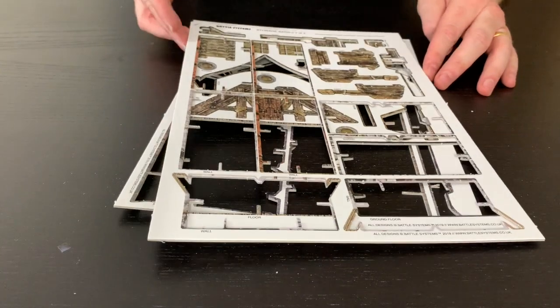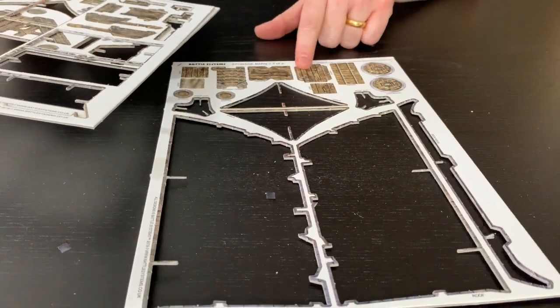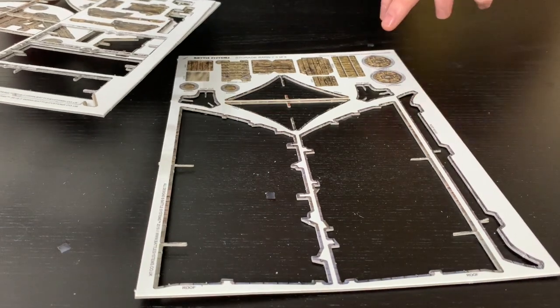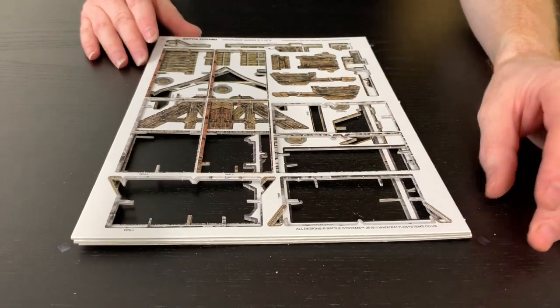And they are all here. Here's your stairs. We've got some more barrels, we've got a ladder for the front of the barn, and we've also got on here some cargo, cargo chests, and boxes. And we've got the wheels and the cart that go with that as well.